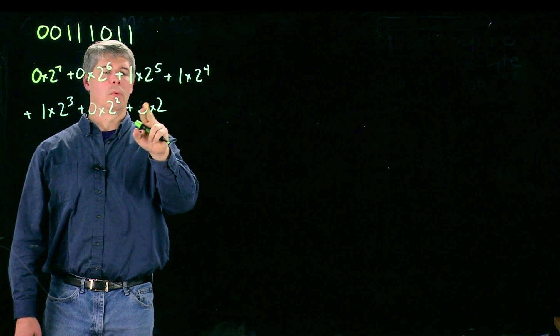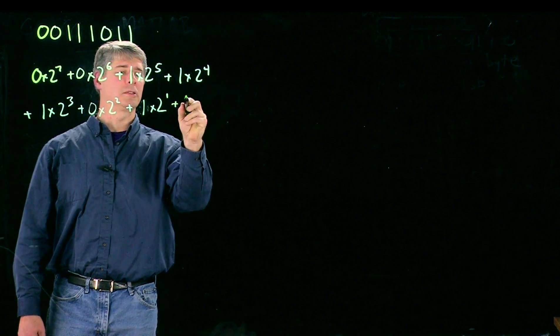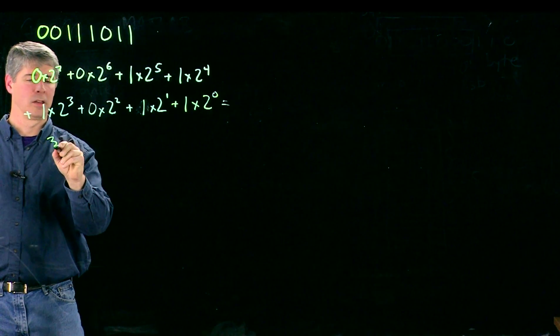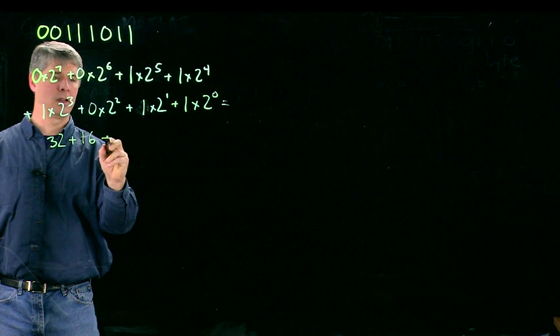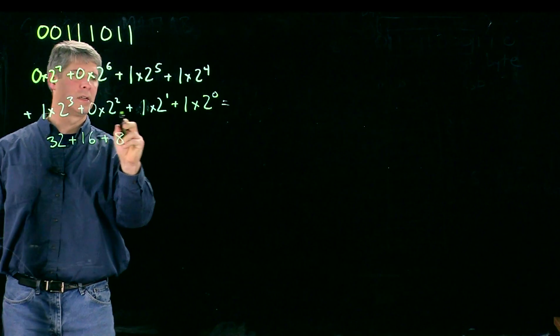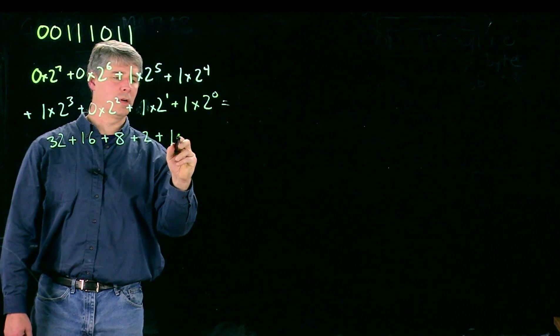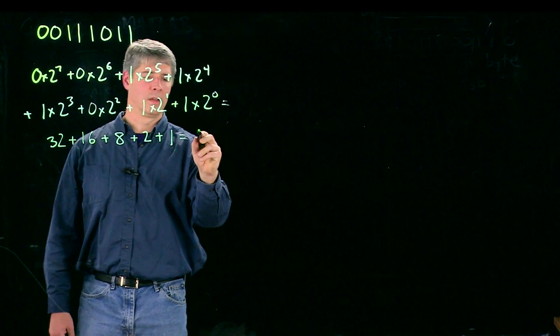Sorry, one times 2^1, plus one times 2^0, which is the same as 32 plus 16 plus 8 plus 2 plus 1, which equals 48, 56, 58, 59.